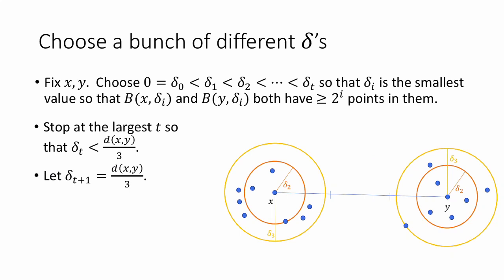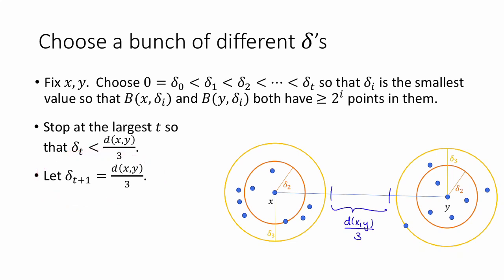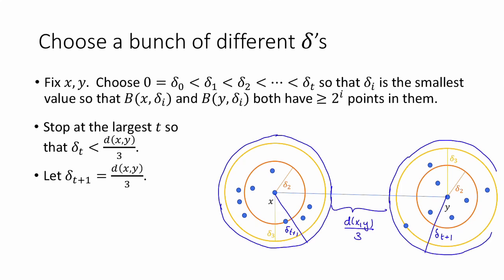When do we stop? We keep choosing larger deltas until we reach about d(x,y)/3. Specifically, we stop at the largest t such that delta_t is strictly less than d(x,y)/3. Then we set delta_{t+1} equal to exactly d(x,y)/3. In the picture, the balls of radius delta_{t+1} about x and y correspond to that stopping radius.